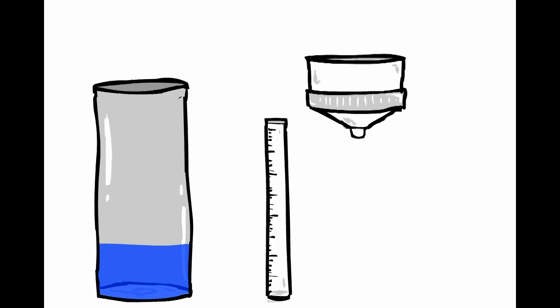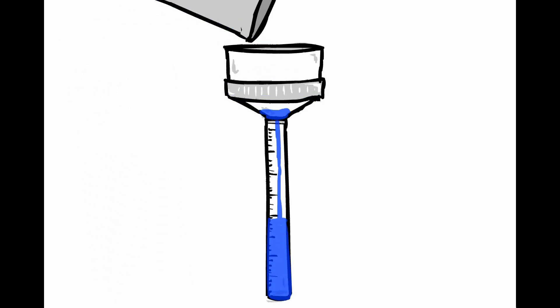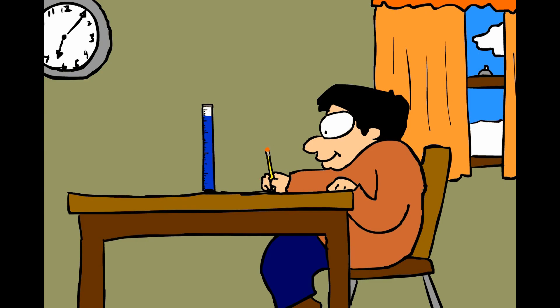Once it's melted, put your funnel atop your inner measuring cylinder and pour in the contents of your gauge. Take a measurement and write it down.